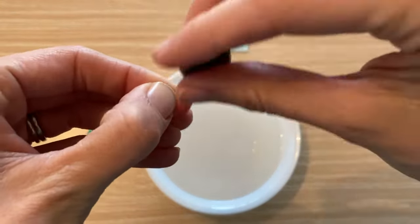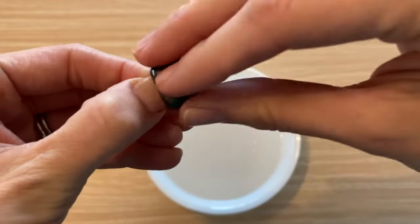Rub a magnet along the needle of your compass about 20 times in the same direction.